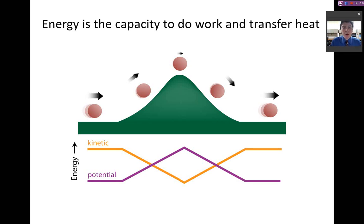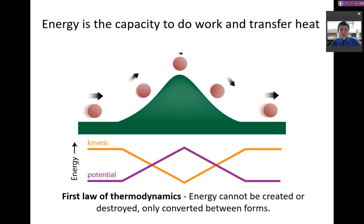This brings us to what we call the first law of thermodynamics, and this states that energy cannot be created nor destroyed, but it's only converted between forms. And there's going to be an asterisk here, because you'll learn later about nuclear chemistry, and in nuclear chemistry, we can create energy from mass and from energy into mass.